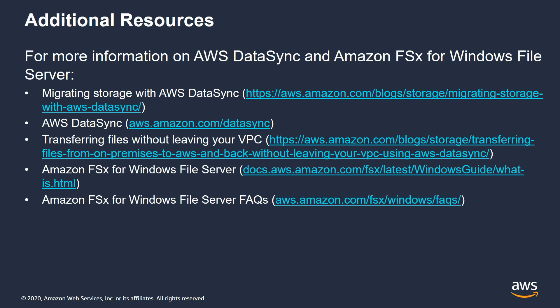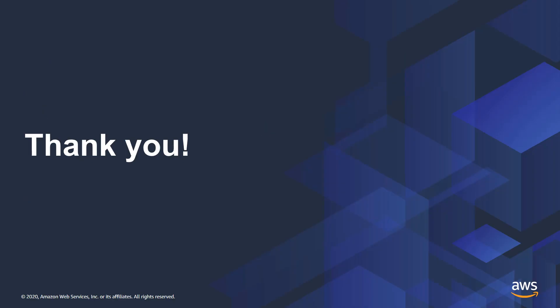Here are some additional resources if you want to learn more about AWS DataSync and Amazon FSx Windows File Server. The first link is to a blog article about how to set up AWS DataSync — if you want to read through the steps versus watching, I highly recommend that article. The second link is to the AWS DataSync web page. The third link talks about how to set up AWS DataSync to transfer files without leaving your VPC, using private endpoints versus the public endpoint used in my demonstration. The last two links are additional information about Amazon FSx Windows File Server. Thank you for joining — take care.